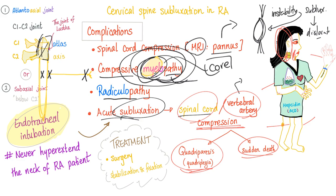Or B — nasotracheal intubation over a fiber optic bronchoscope. Second difficult question: what if there is an emergency requiring intubation, but the patient has both atlantoaxial subluxation and maxillofacial injury? Since the mouth and nose are injured, you cannot do endotracheal or orotracheal intubation, so you should perform a tracheostomy or a cricothyroidotomy.